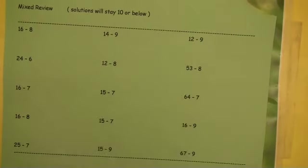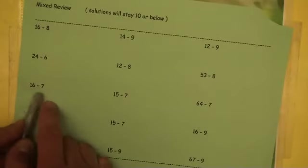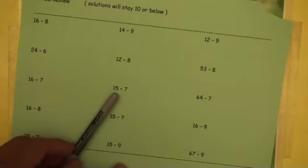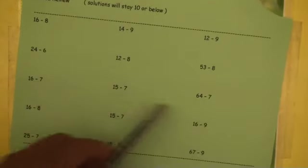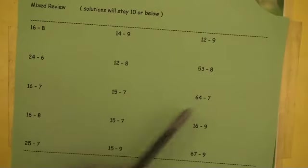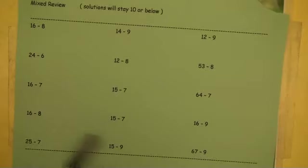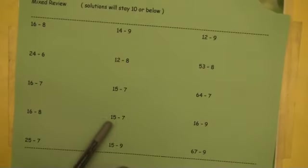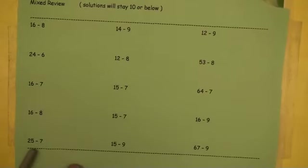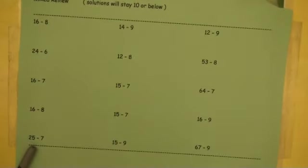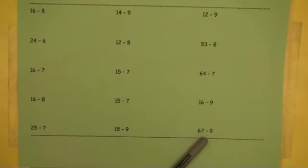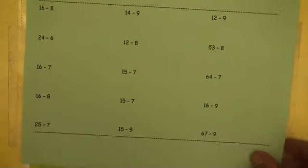53 minus 8. Well, 53 minus 3 is 50. 5 more, 45. 16 minus 7. Here's another one of those 10 situations. How far is this number away from 10? 6. How far is this away from 10? 3. What's 6 plus 3? 9. There you go. 15 minus 7. Same thing. 5 here, 3 there. That's 8. 64 minus 7. 64 minus 4 is 60. Minus 3 more is 57. This is the same problem we did up here. That's 8. 15 minus 7. Well, same thing. 5, 3. That's 8. Same one. 16 minus 9, 7. 25 minus 7. Well, 25 minus 5 is 20. Minus 2 more, 18. 15 minus 9. Same thing. You have 5 away from 10, 1 away from 10. A total of 6. 67 minus 9. 67 minus 7 is 60. Minus 2 more, 58.